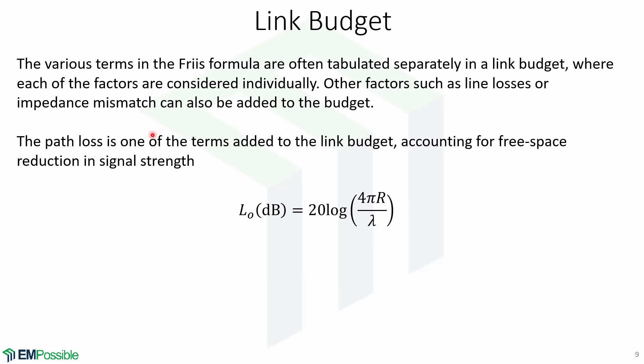One of the terms in a link budget is the path loss, and it accounts for free space reduction in signal strength, and is given by L0 in decibels, equal to 20 log(4πr/λ). Note that the path loss depends on the wavelength, which serves to provide a normalization for the units of distance for this term.